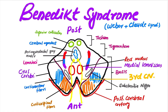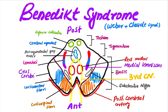This is the Edinger-Westphal nucleus of the third cranial nerve. This is the red nucleus, this is substantia nigra, and this is the crus cerebrae containing the corticobulbar fibers and corticospinal fibers. This is the third nerve, and this is the posterior cerebral artery.